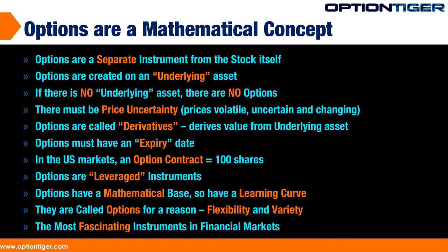Additionally, there must be price uncertainty — meaning prices are moving constantly, prices are volatile, prices are changing and uncertain. There has to be price uncertainty around the underlying asset; otherwise you cannot have an option. This is why options are called derivatives, because the value of the option is derived from the uncertainty and the movement of the underlying asset.